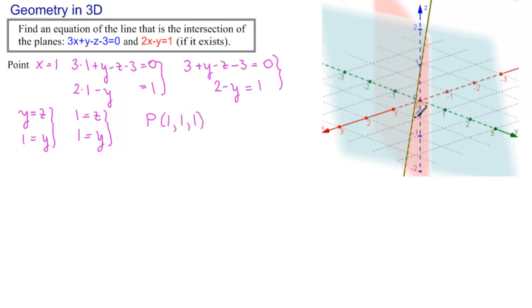Which is 1, 1, 1 right there. That's that point, P. And so we have a point. Now what do we need? We need a directional vector.